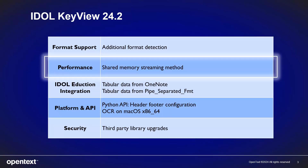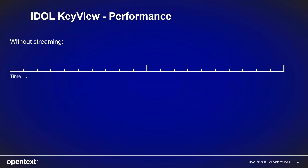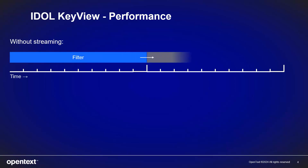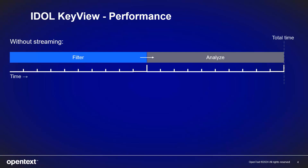What do I mean by streaming? One way of using KeyView would be to get it to filter all of the text from your input file before you then analyse that text, for example by passing it to IDOL Eduction. The total time taken is the time to filter plus the time to analyse.